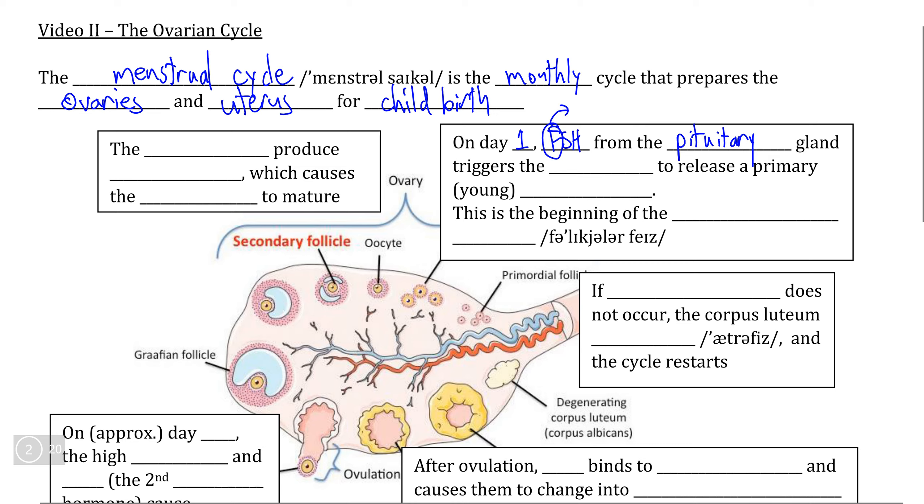If you remember what the F in FSH stands for, that being follicle, because FSH is follicle stimulating hormone, that gives you a hint as to what FSH is going to tell the ovaries to do. When FSH migrates to the ovaries via the circulatory system, it sends a signal to the cells in the wall of the ovaries to release a group of young follicles,